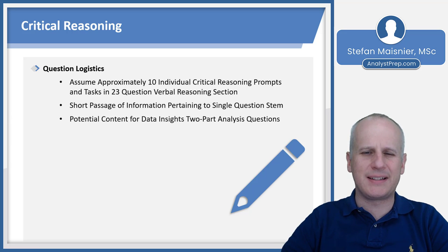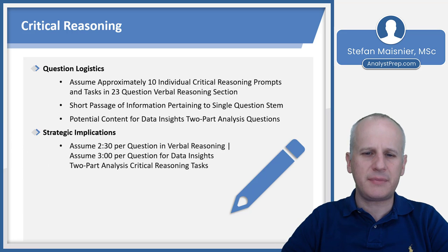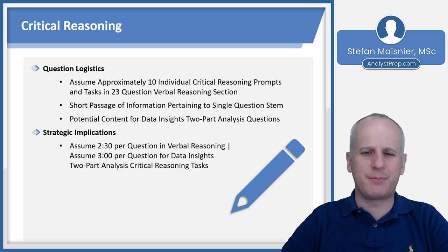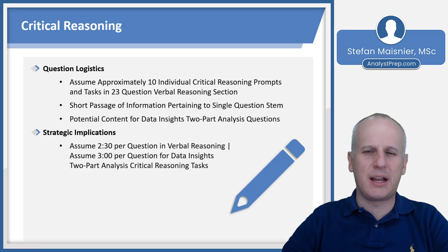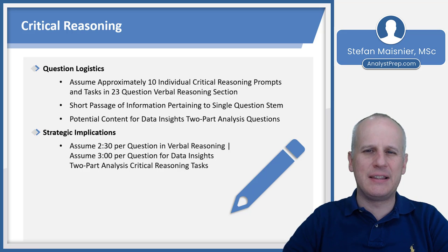They also can be potential content for data insights two-part analysis questions as well. Strategically, you want to spend about two and a half minutes per question on critical reasoning style problems in the verbal reasoning. This is a little bit more time per question than the reading comprehension, and the reason for that is the details here matter materially. You really have to pay attention to little subtle term shifts, details, qualifiers, and quantifiers because those often lead to the right answer.